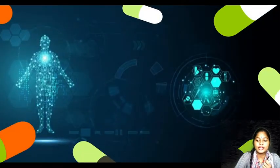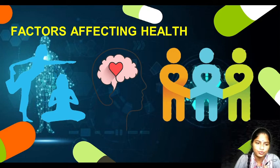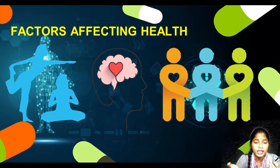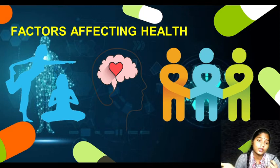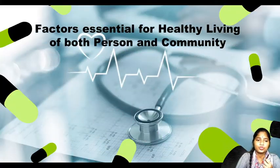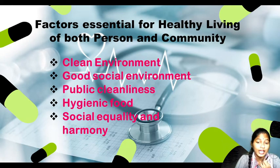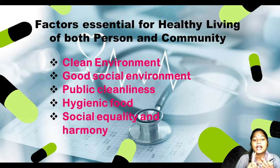Let's look at the factors affecting health one by one. There are three: physical, mental, and social. Physical means you have to stay fit — exercise, do yoga. Mental means you are always cheerful, happy, without any disturbance. Socially, you feel free to exchange your emotions with people around you, share your feelings — you are socially healthy too. Factors essential for healthy living of both a person and community include: a clean environment, good social environment, public cleanliness, hygienic food, social equality and harmony — everything is important to have a healthy living.